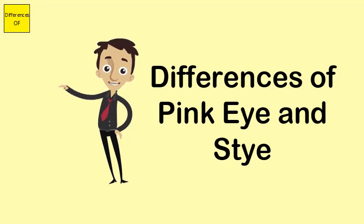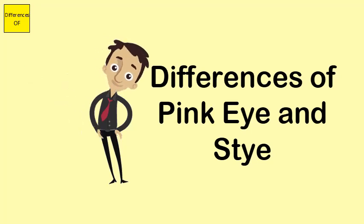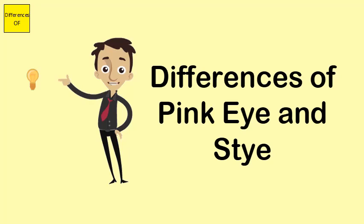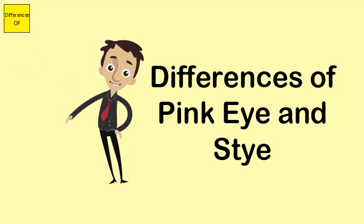Stye is characterized by development of dead cells or scar tissue at the site, and also presence of bumps. Pink eye lacks both these features.